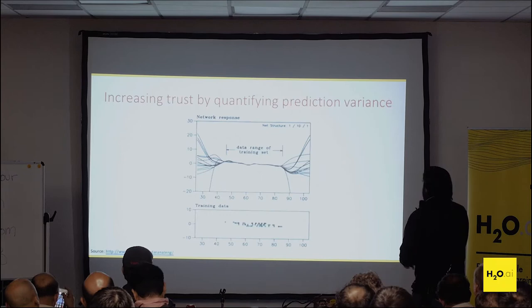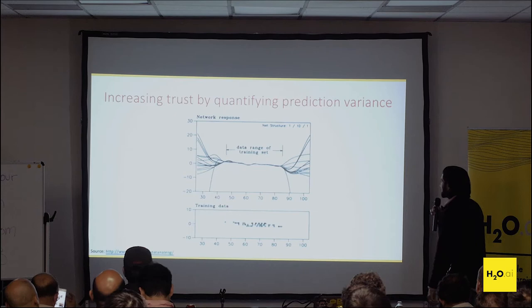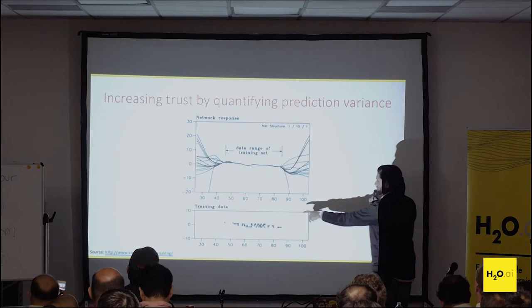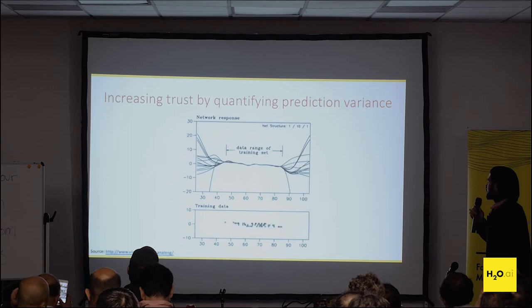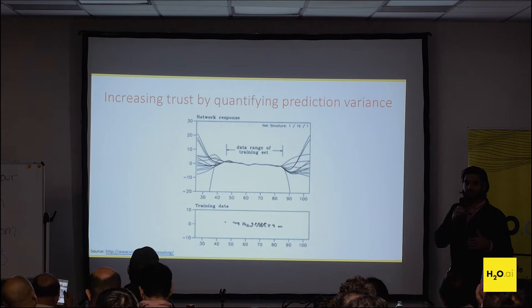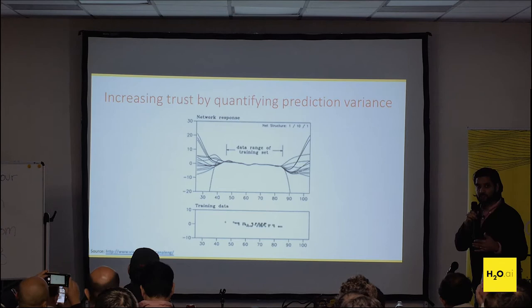Another thing we're trying to get from MLI is to trust the models we're building. Here's one of my favorite examples: we have our training data set space going from, say, 40 to 85, but then we put that model in production and it sees stuff it never saw before and goes crazy. With machine learning interpretability we also want to do some type of sensitivity analysis and see when the model starts being unstable — what is this model's sense of reality and when does that sense of reality start going haywire.